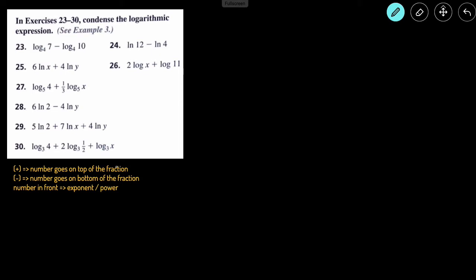These will make more sense when we look at the examples. Number 23: we have log base 4 of 7 minus log base 4 of 10. We copy over the log base 4, then set up a fraction. The 7 has a positive in front, so it goes on the top. The 10 has a negative, so it goes on the bottom, giving us log base 4 of 7 over 10.